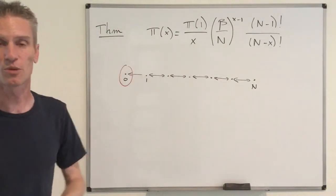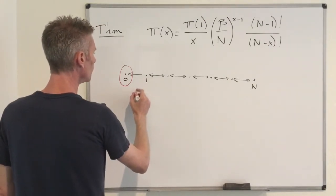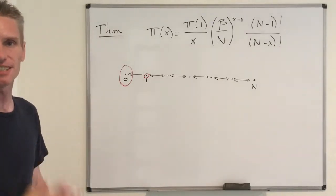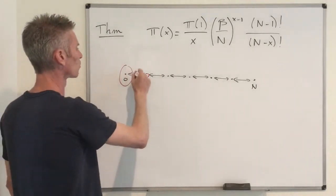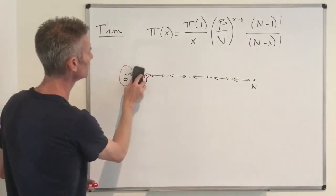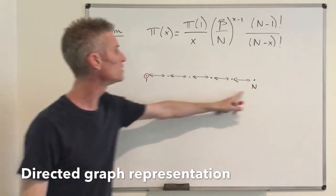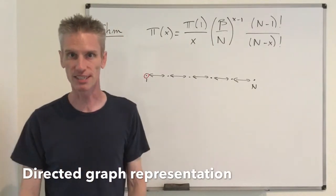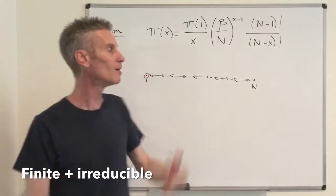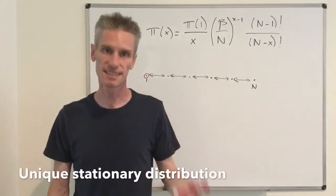Now to obtain the process Y_t, we said that we assume that delta_1 is equal to zero, meaning that if you are only one individual in the system, this individual is not allowed to die — you basically remove this arrow. So you end up with a stochastic process whose directed graph looks like that. The new state space is {1, 2, ..., N}, and any state communicates with any other state. So the process Y_t is finite and irreducible, meaning positive recurrent and irreducible, and so there is indeed a unique stationary distribution.